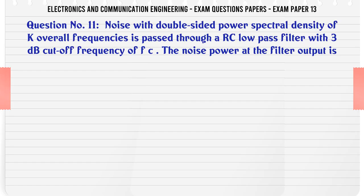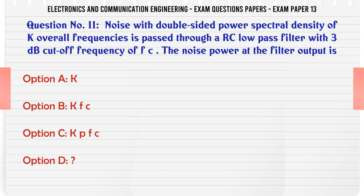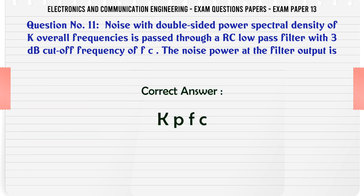Noise with double sided power spectral density of K overall frequencies is passed through a RC low pass filter with 3 dB cutoff frequency of FC. The noise power at the filter output is: A: K, B: K FC, C: K pi FC, D: 2 K pi FC. The correct answer is K pi FC.